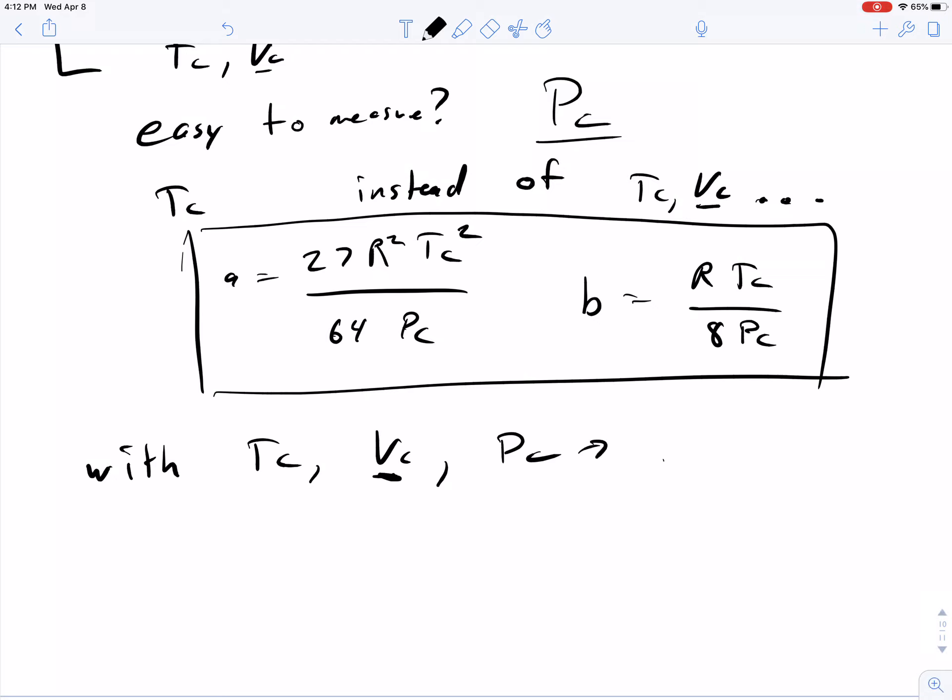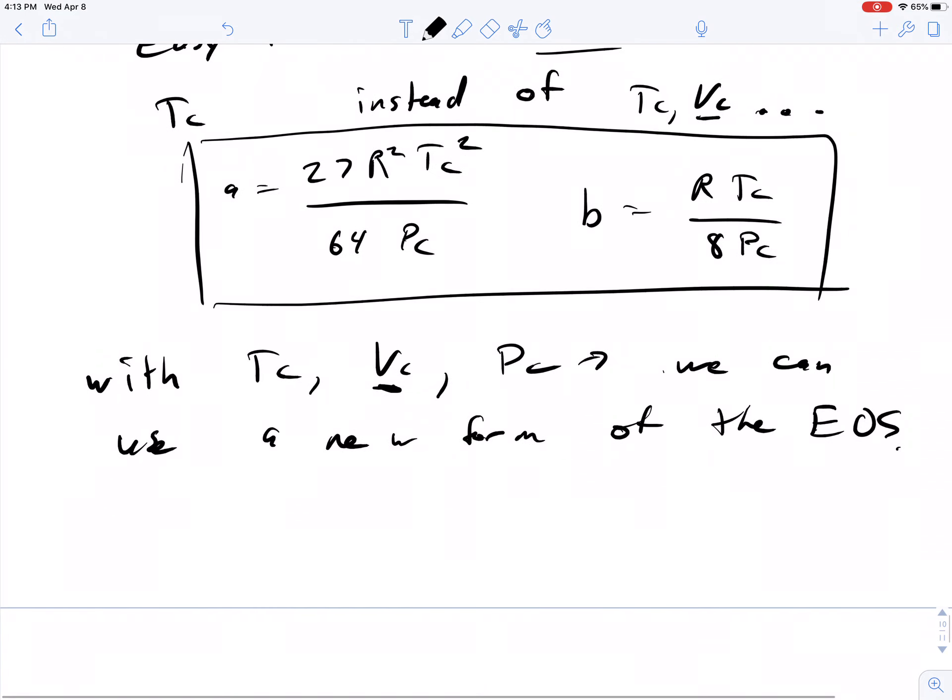Once you have TC, VC, and PC, we can use a new form of the EOS. This becomes very helpful, and I'll show you even later when we do fugacity calculations, that having an idea of TC, PC, VC helps your ability to write code and also solve for vapor liquid equilibrium, which we haven't discussed yet. We just discussed that we have the different phases with this type of material.